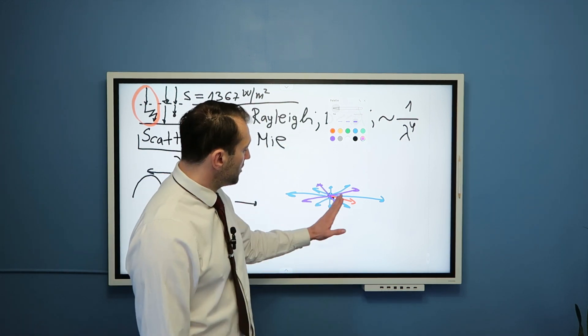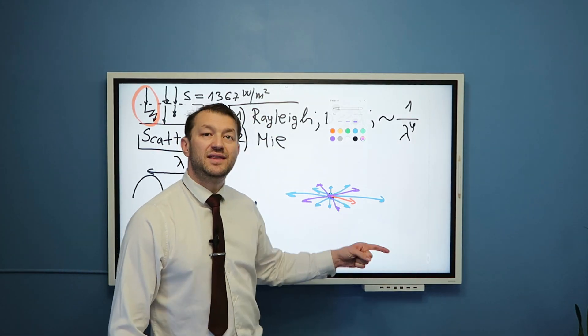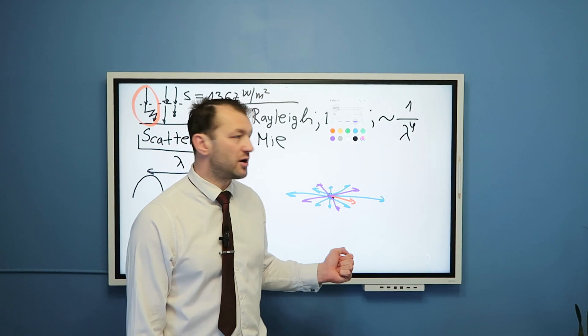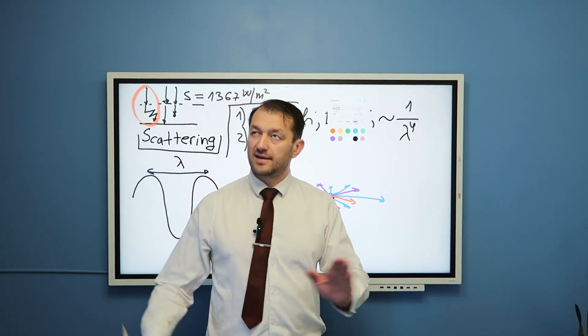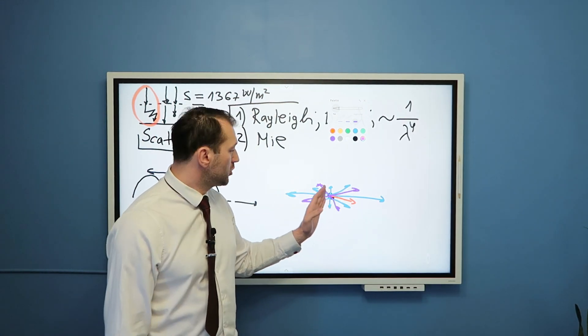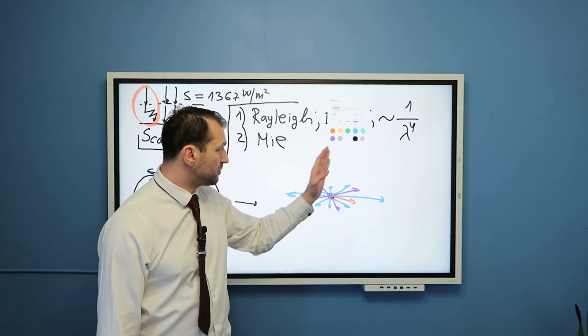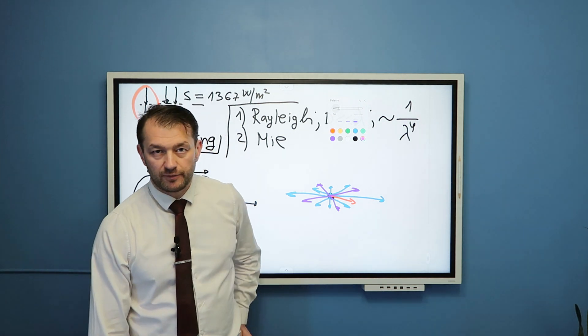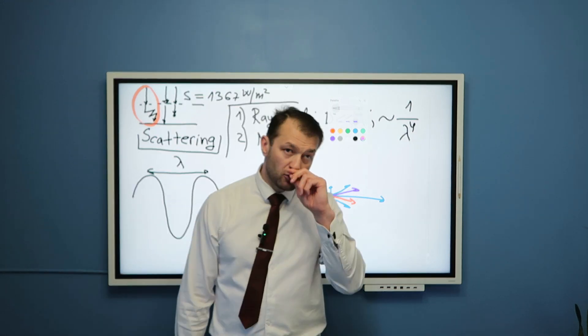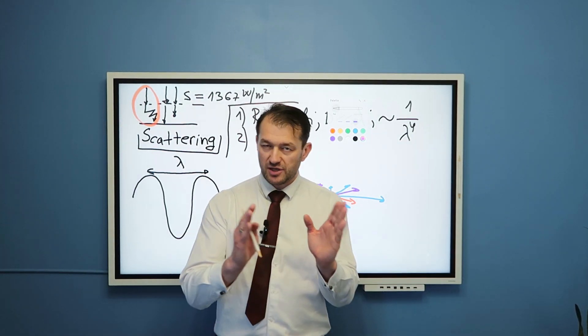Now, when you observe this figure, perhaps you can already conclude that if this is what is happening in our atmosphere, and this is what is happening in our atmosphere, it is not surprising that the sky is blue, because blue and purple colors predominantly scatter off of these small particles, namely molecules of air. You might say, then why is sky not purple? There are mainly two reasons.